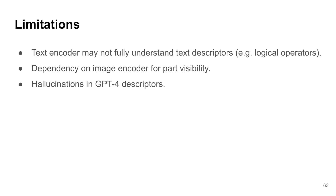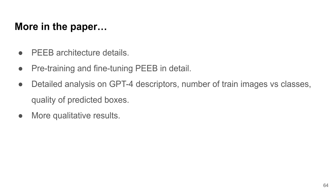There are three limitations in this work. First, the text encoder may not fully comprehend the part descriptors due to limitations in understanding logical operators. Second, there is a dependency on the image encoder for parts visibility — for some examples, the bird parts are not visible but PIP still uses matching scores for prediction. Third, hallucination in GPT-4 descriptors. Please refer to our paper for further details.